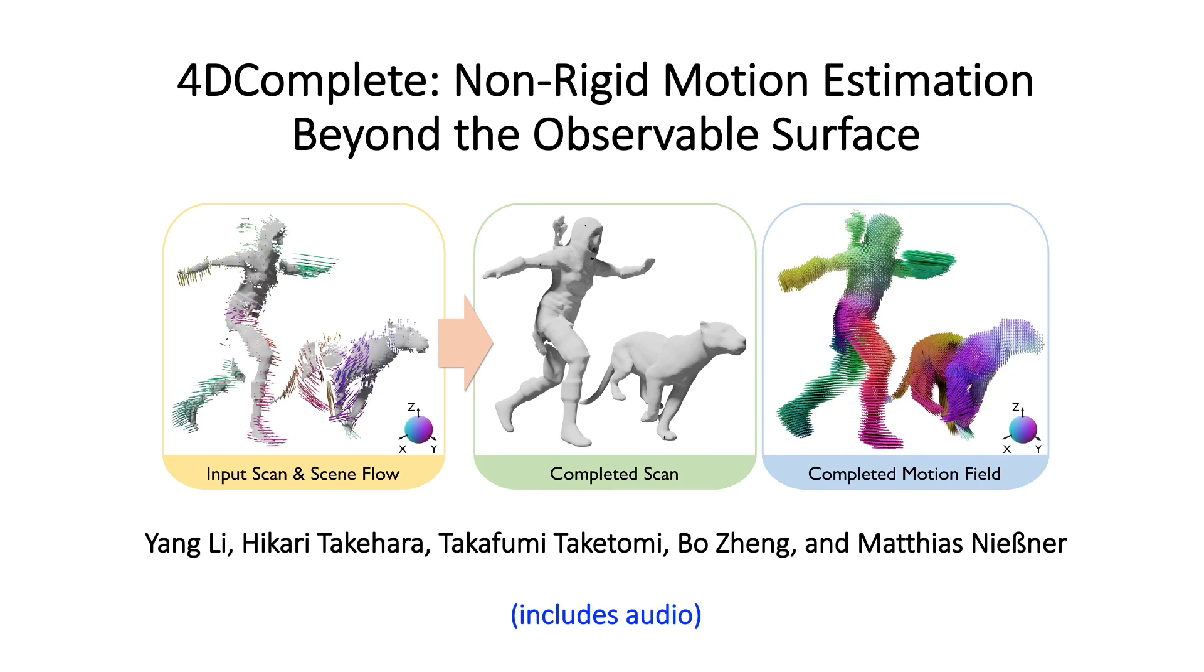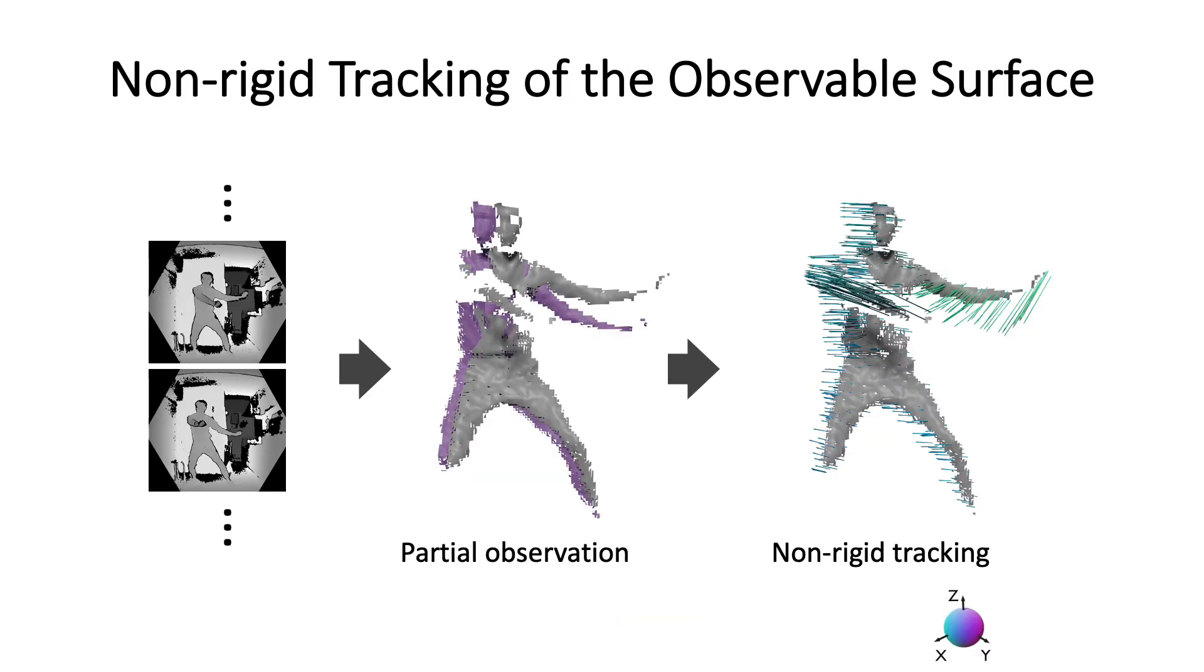We present 4D complete, non-rigid motion estimation beyond the observable surface. Given a depth sequence of a deforming scene, the inter-frame motion can be determined by non-rigid tracking algorithms.